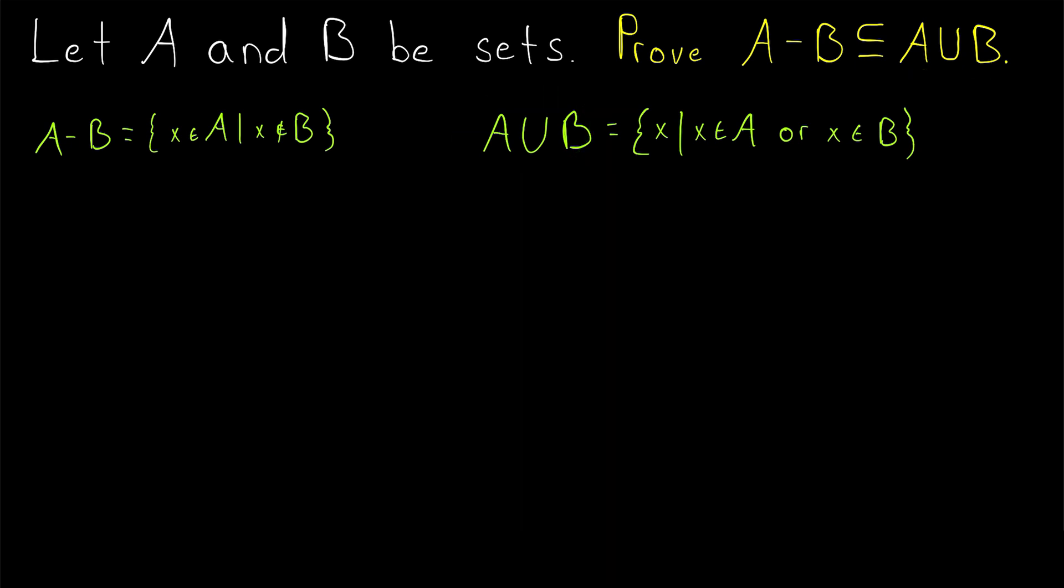So immediately, without writing a proof, we can see why this is true just by looking at the definitions. A minus B clearly consists only of elements of A. A union B, by definition, contains every element of A. And so indeed, A minus B is a subset of A union B.